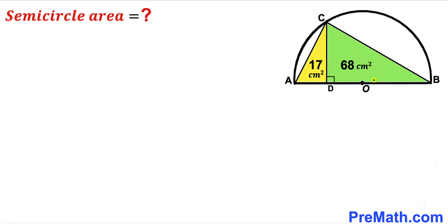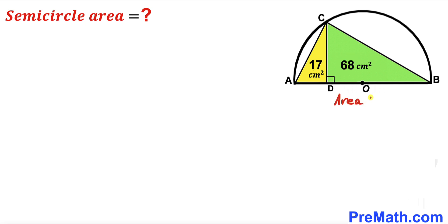Welcome to pre-math. In this video we have triangle ABC fully inscribed in a semi-circle with center O. CD is the perpendicular, giving us two right triangles: yellow triangle ADC and green triangle BDC. The area of the yellow triangle is 17 cm² and the area of the green triangle is 68 cm². Our task is to calculate the area of this semi-circle.